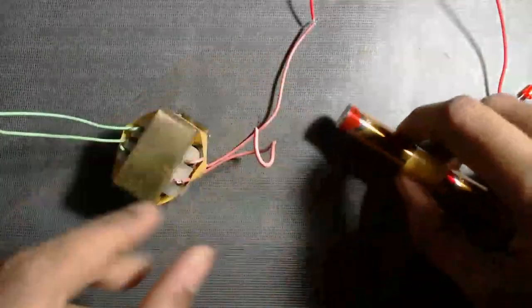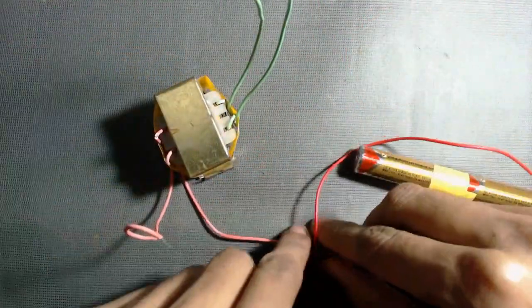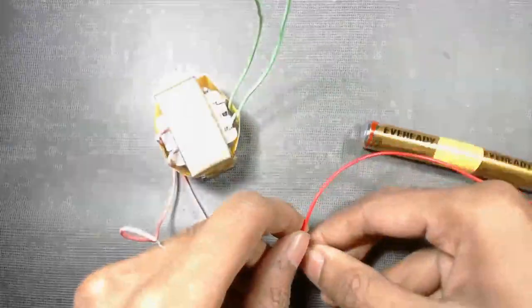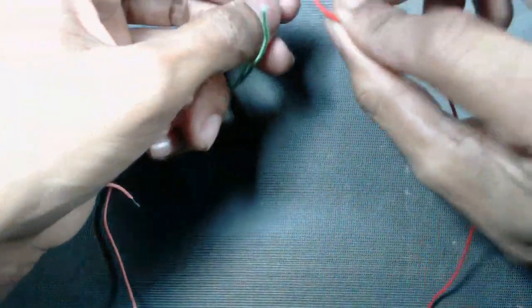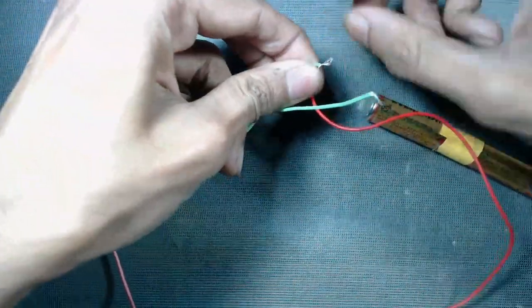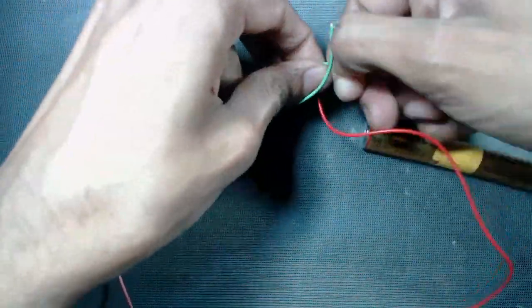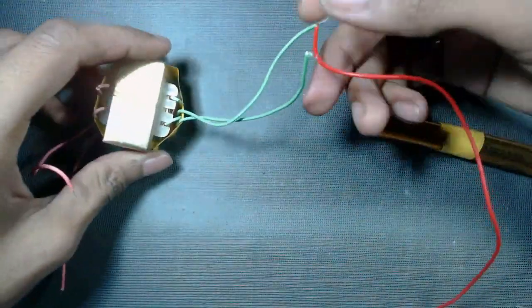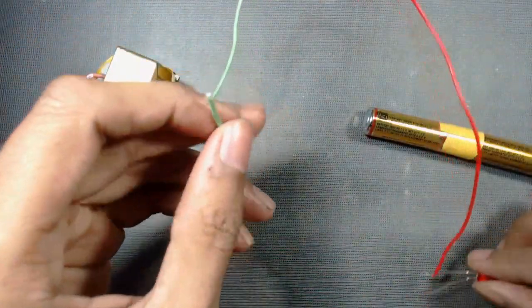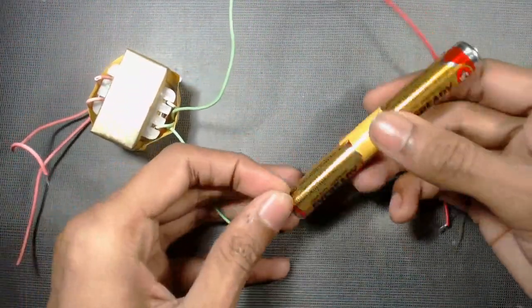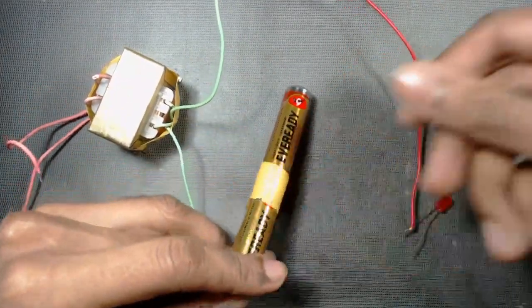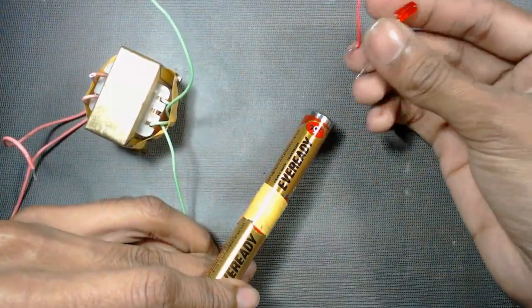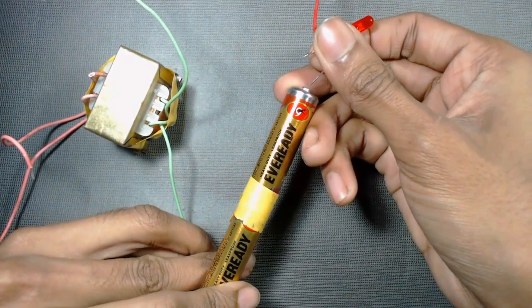So, do it for the other side. Connect this with any one of the terminals on this side. Now, keep your battery like this and connect this point here. And you connect the positive terminal here.